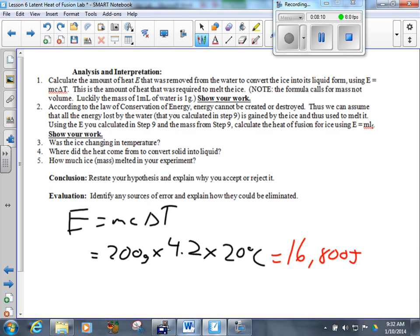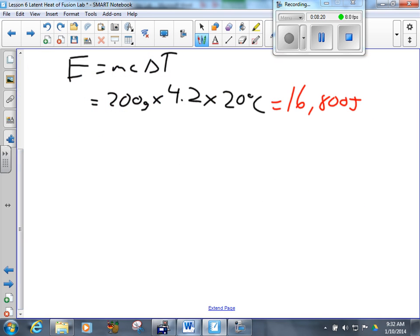That gives us 16,800 joules. So that's how much energy the water lost. That energy, according to number two here, according to the law of conservation of energy, that energy had to go into the ice. So that means that when I'm looking at how much energy was required to melt the ice, I have this formula. And now I know what E equals. It's 16,800 joules. Everyone follow me on that part? Now, when you were done, you had more water than when you started, yes? Where did that water come from? The extra. From the snow.